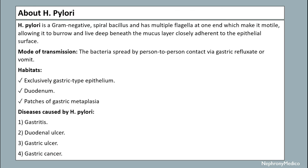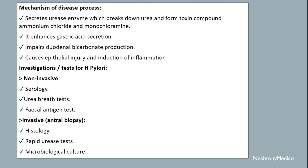About H. pylori: it is a gram-negative bacillus that transfers by person-to-person contact via gastric refluxate or vomit. Its habitat includes gastric-type epithelium, duodenum, and patches of gastric metaplasia. Diseases caused by H. pylori include gastritis, duodenal ulcer, gastric ulcer, and gastric cancer.